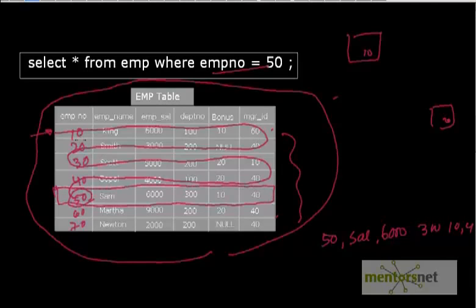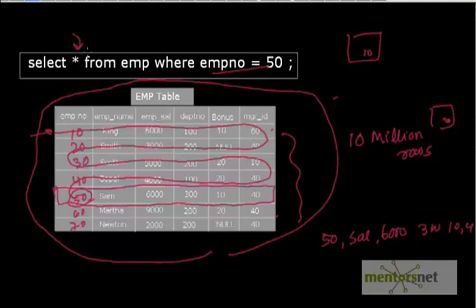Now imagine this table has 10 million rows. Oracle is going to do the same process, scanning one row after another, and the query may take a very long time depending on your hardware. This process of finding data by scanning every row is called a full table scan.